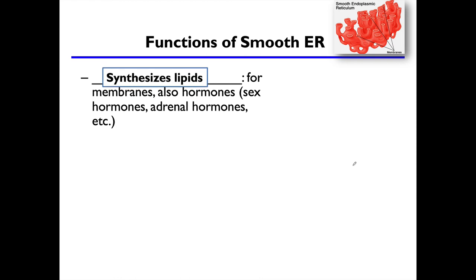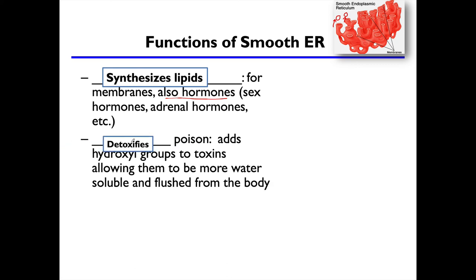The functions of the smooth endoplasmic reticulum: first, they make more lipids. Since the ER makes up more than 50% of the cell's membrane composition, you need a lot of it, and the smooth ER constantly creates vesicles to maintain a stable amount. Another thing the smooth ER produces are hormones — lipid-based chemicals released into bloodstreams or fluid compartments that affect physiology or metabolism elsewhere in the organism.